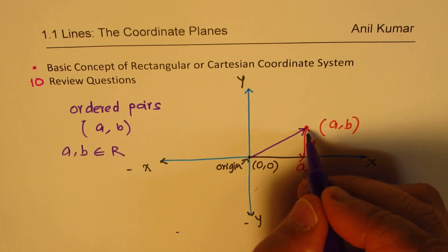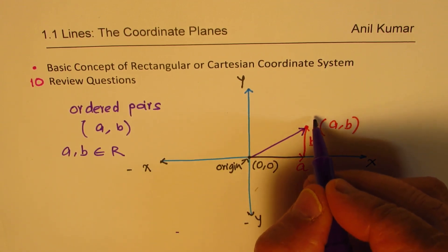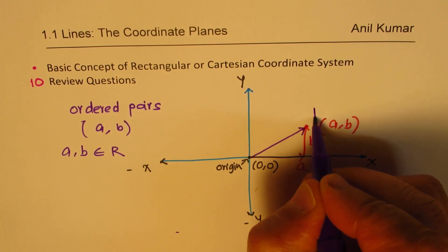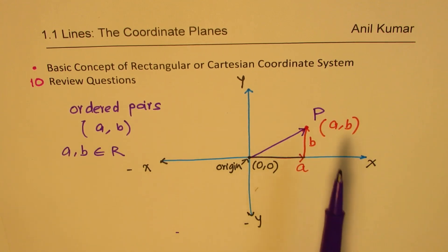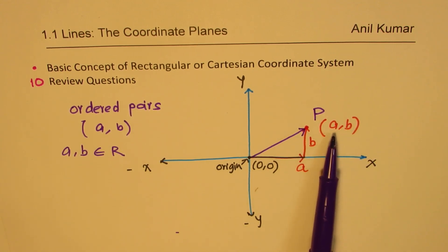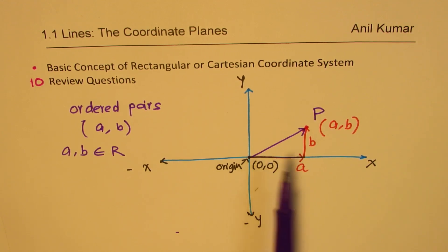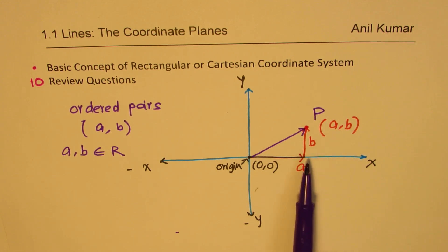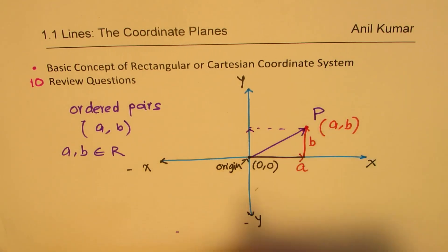Normally we refer to a point with a name written in a capital letter — for example, P. So a point P has a location in our system (a, b), where a is the horizontal distance from the origin and b is the vertical distance from the origin. That is how each and every point will be defined.